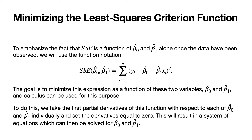The goal is to minimize this expression as a function of the two variables beta zero hat and beta one hat, and calculus can be used for this purpose. To do this, we take the first partial derivatives of this function with respect to each of beta zero hat and beta one hat individually, and set the derivatives equal to zero. This results in a system of equations which can then be solved for beta zero hat and beta one hat.